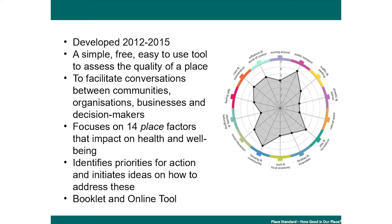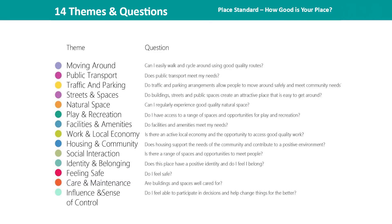It's a very simple, easy-to-use tool to facilitate conversation between communities, organisations, businesses, and politicians. It focuses the conversation around 14 key themes and headline questions. What we wanted to do was move away from jargon and make it a very accessible conversation. So the first question doesn't ask about active commuting or green travel — it simply asks: can I easily walk and cycle around using good quality routes? Anyone can have a conversation about the ability to walk, cycle, or get around in a wheelchair or other mobility support.